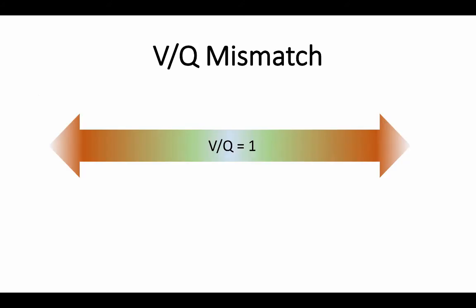Let's move on to VQ mismatch. In the ideal situation, there is exactly enough ventilation to meet the perfusion needs and the VQ ratio is 1. When ventilation is inadequate, the VQ ratio is less than 1. And when perfusion is inadequate, the ratio is greater than 1. This is the concept of VQ mismatch.